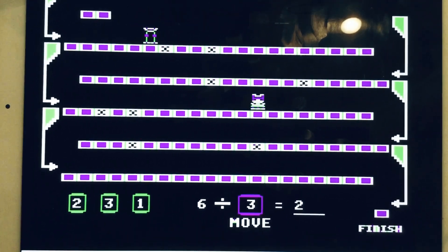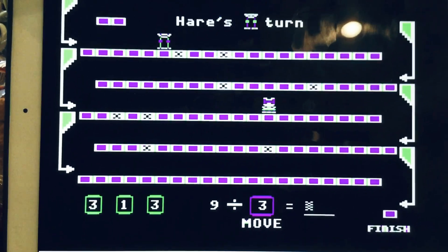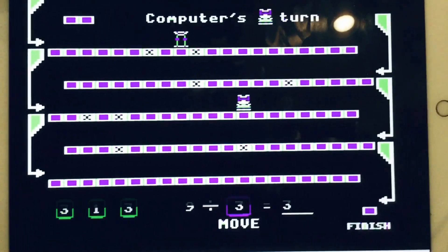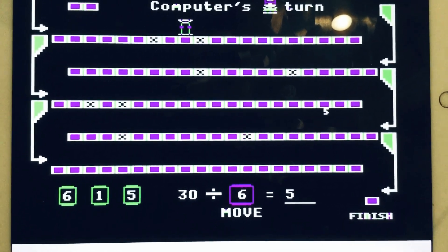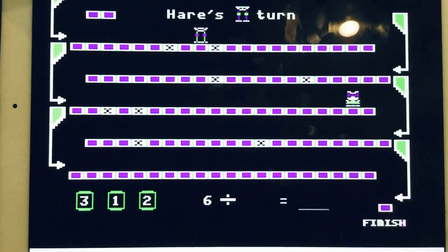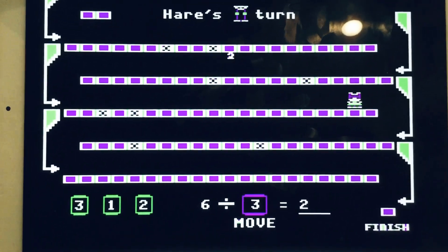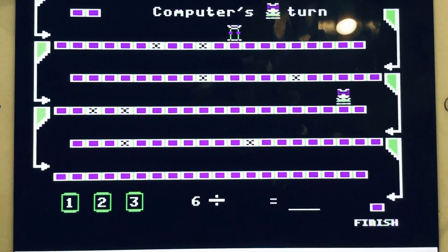In the meadow, we can build a snowman, then pretend that he is Parson Brown. He'll say, are you married? We'll say, no man. But you can do the job when you're in town. Later on, we'll conspire.